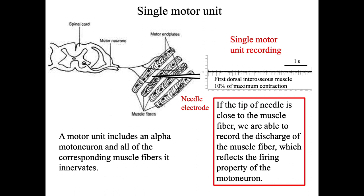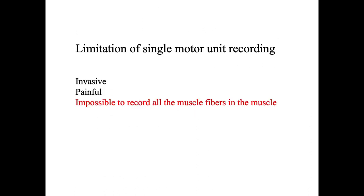The firing property of the muscle fiber can reflect the firing property of the motor neuron connected to those muscle fibers. On the right side, we can see an example recording of the single motor unit recorded in the first dorsal interosseous muscle. There is a very clear limitation of single motor unit recording: first, it is invasive and painful, and second, it is almost impossible to record all the muscle fibers in the muscle with single motor unit recording.